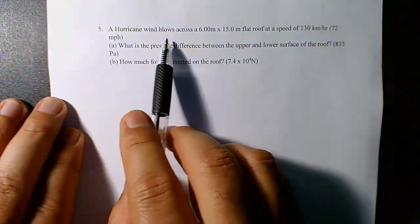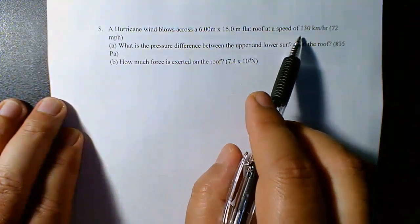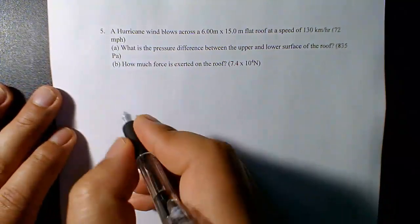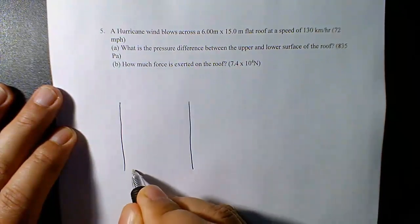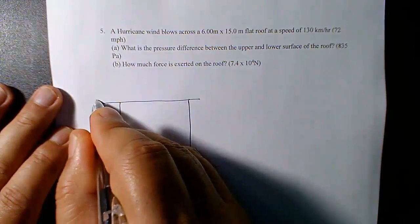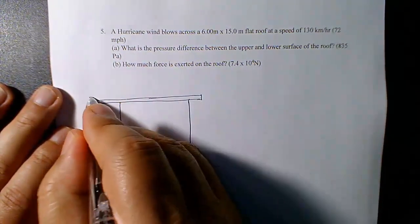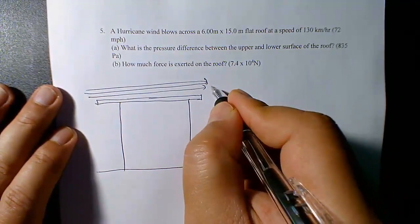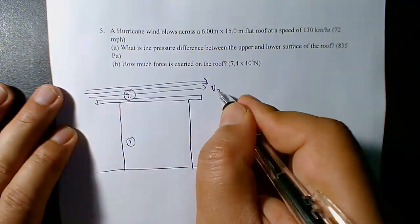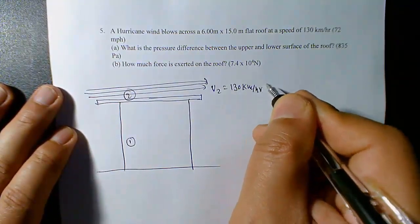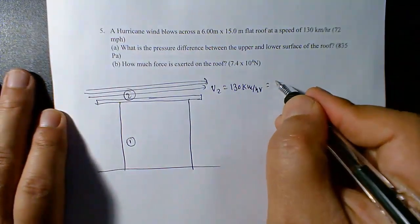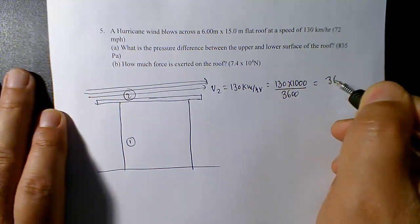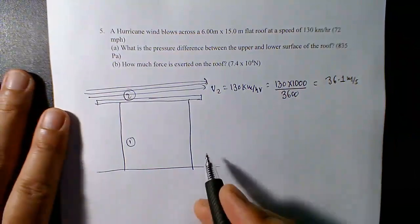The next problem: a hurricane wind blows across a 6 by 15 meter flat roof at 130 kilometers per hour. What is the pressure difference between the upper and lower surface of the roof, and how much force acts on the roof? The wind speed must be converted to meters per second: 130 km/h times (1000 m/km) divided by (3600 s/h) equals 36.1 meters per second.